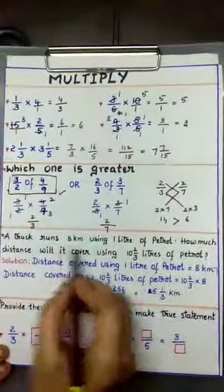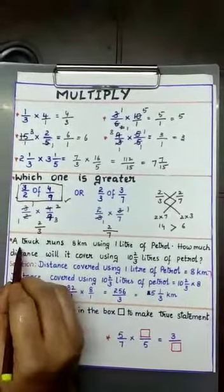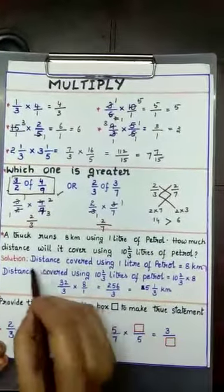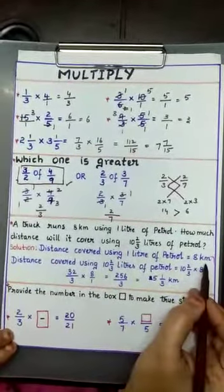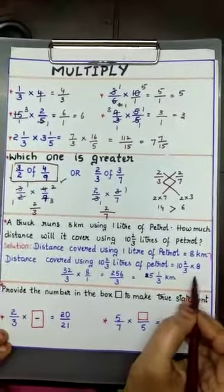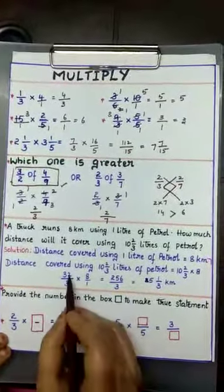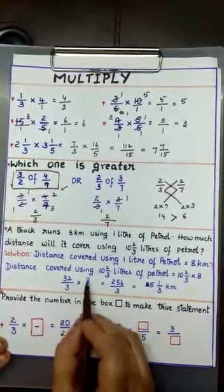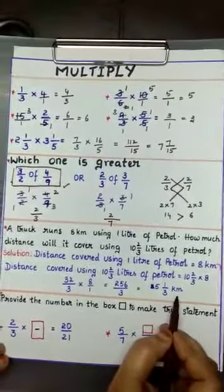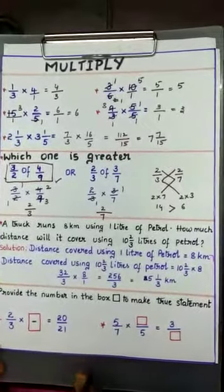Word problem: A truck runs 8 kilometers using 1 liter of petrol. How much distance will it cover using 10 and 2/3 liters of petrol? Distance covered using 10 and 2/3 liters means 10 and 2/3 into 8. Convert the mixed fraction: 3 tens are 30 plus 2 gives 32/3. Multiply by 8/1: 32 times 8 is 256 by 3. Converting: 85 remainder 1, so the answer is 85 and 1/3 kilometers.